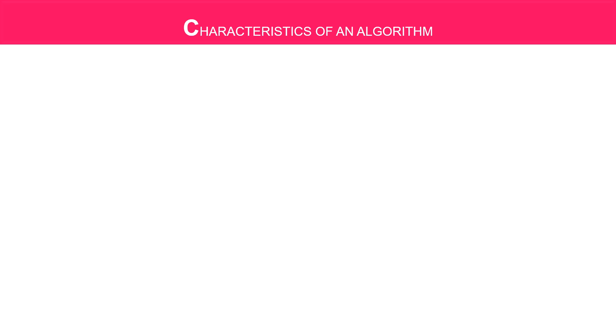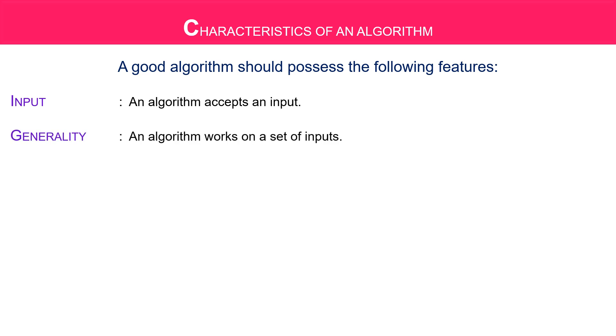Characteristics of an algorithm. A good algorithm should possess the following features. Input: an algorithm accepts an input. Generality: an algorithm works on a set of inputs.